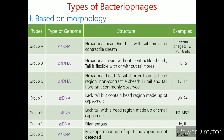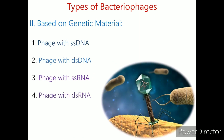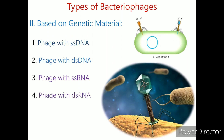Group F has a single-stranded DNA type of genome and is filamentous. Examples are FD and FL. Group G has a double-stranded RNA type of genome. It has an envelope made up of lipid and the capsid is not detected. An example is MBL2. Types of bacteriophages based on genetic material include: phage with single-stranded DNA, phage with double-stranded DNA, phage with single-stranded RNA, and phage with double-stranded RNA.